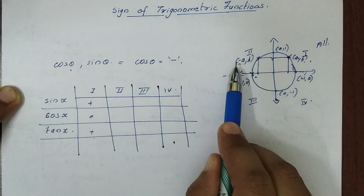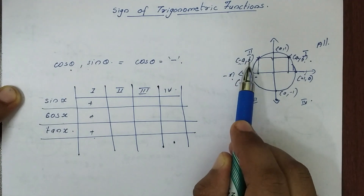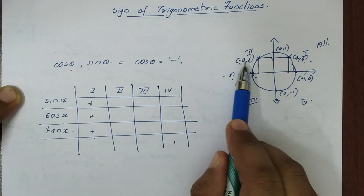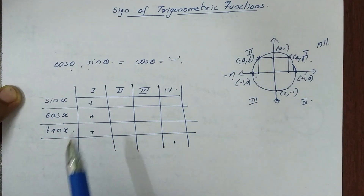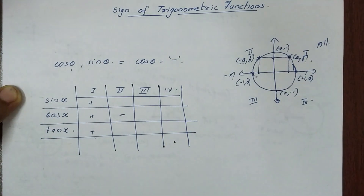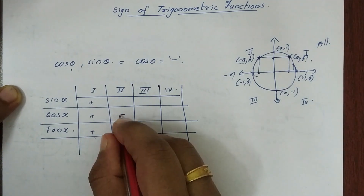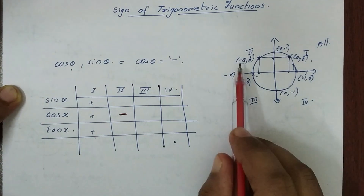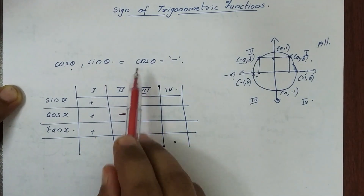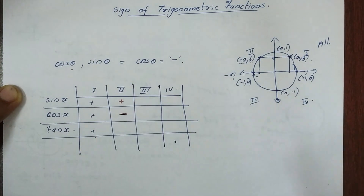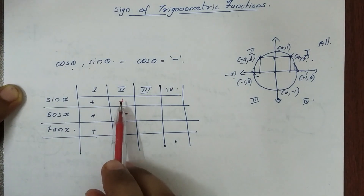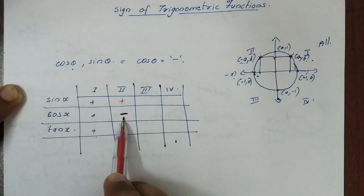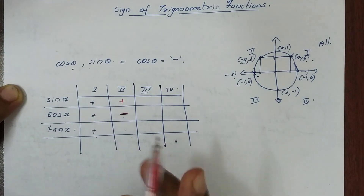Now in the second quadrant, the coordinates are (minus a, b). Now minus a is cos, so cos in the second quadrant is negative. Now b is sin theta, and b is positive. So in the second quadrant, sin theta is positive. If we have sin theta divided by cos theta, this is positive divided by negative.